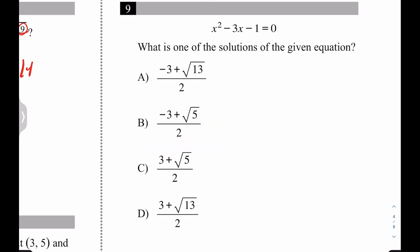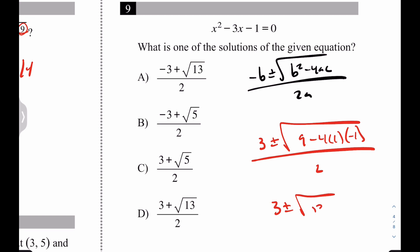Let's do the quadratic formula. The quadratic formula is negative b plus or minus square root of b squared minus 4ac, all divided by 2a. At which point we have 3 plus or minus square root of 9 minus 4 times 1 times negative 1, all over 2. At which point we have 3 plus or minus root 13, all over 2. And I think we have our answer. Our answer is D.